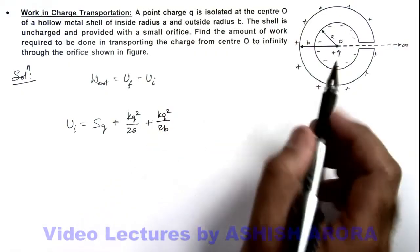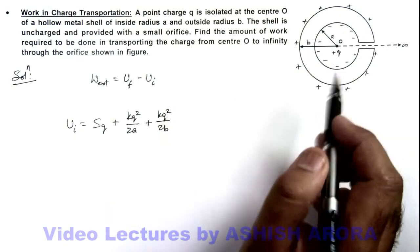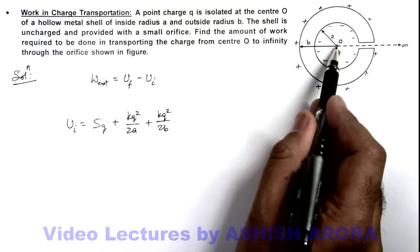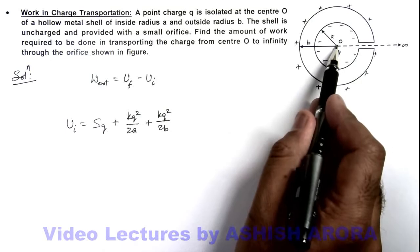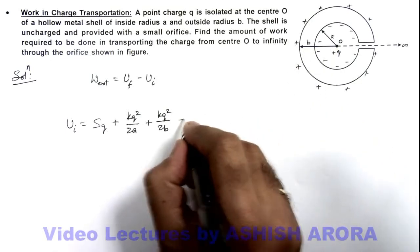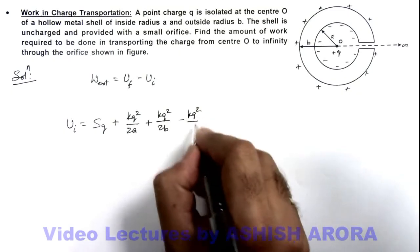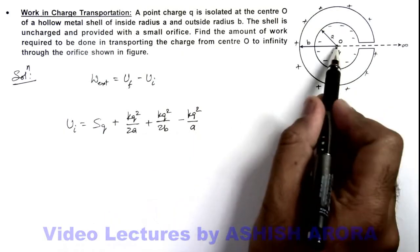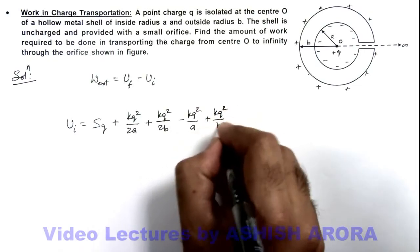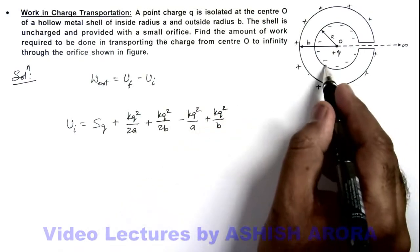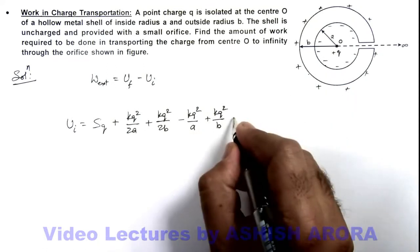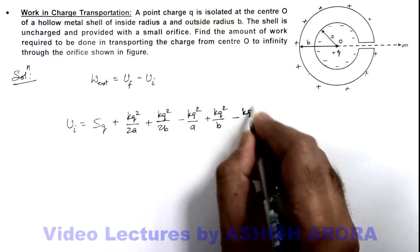Plus we need to add the interaction energy for all charges present here. This will be the interaction energy between the central charge and this charge, which can be written as -kq²/a. Then the central charge and the outermost charge, this will be +kq²/b. And the interaction energy of these two charges, that will be -kq²/b.